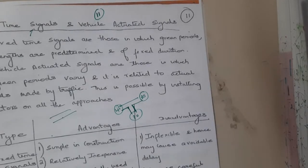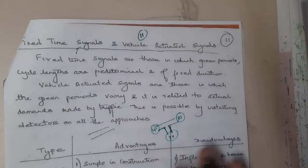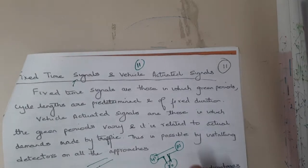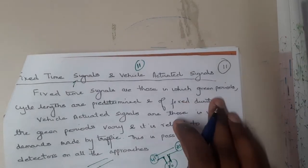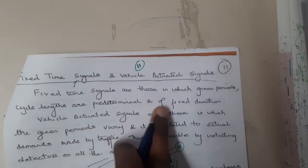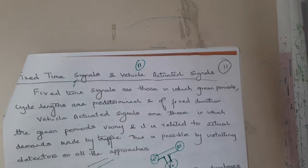Vehicle actuated time is a bit different. Fixed time signals are those in which green period cycle length are predetermined and for fixed relation. The green signal is of a fixed time - 30 seconds, 30 seconds, and 45 seconds in that way.